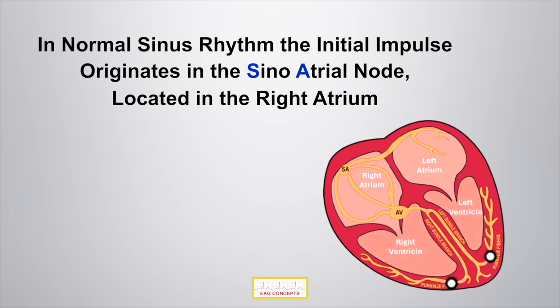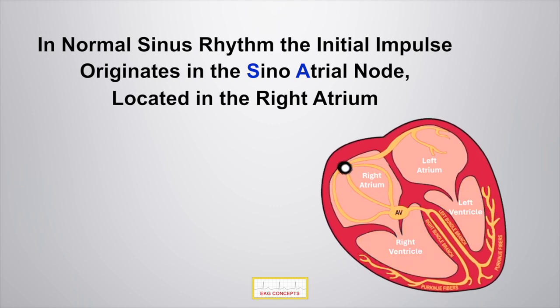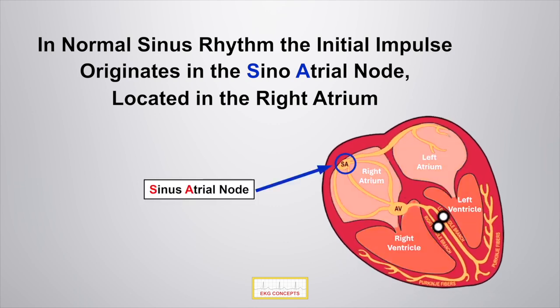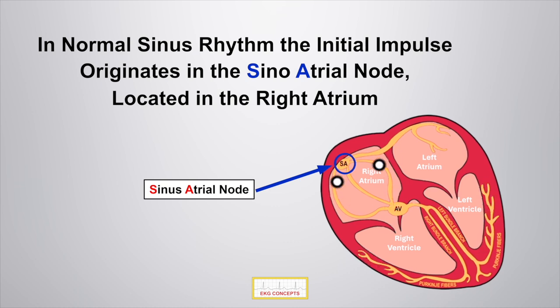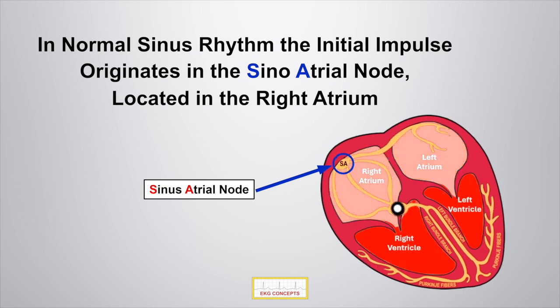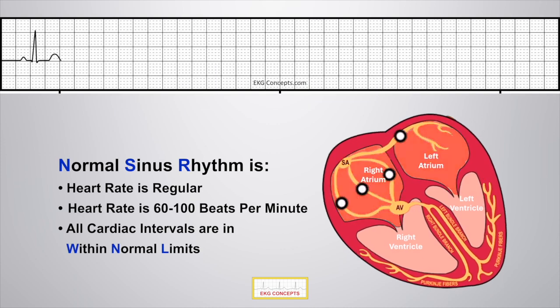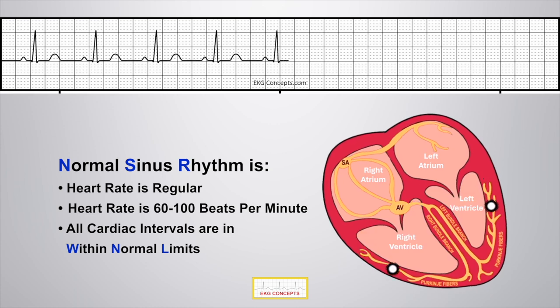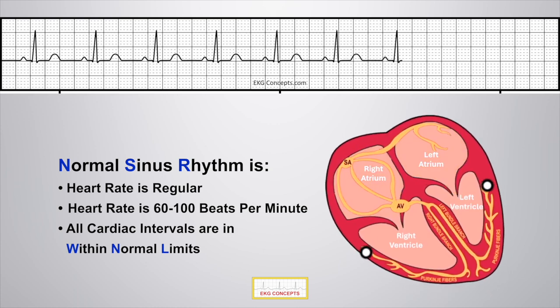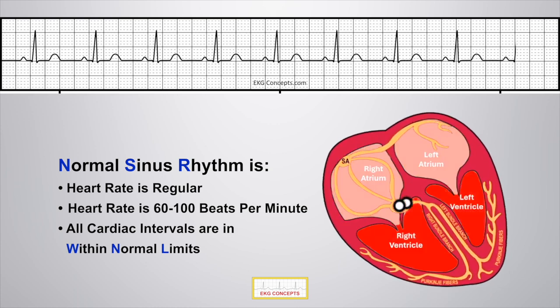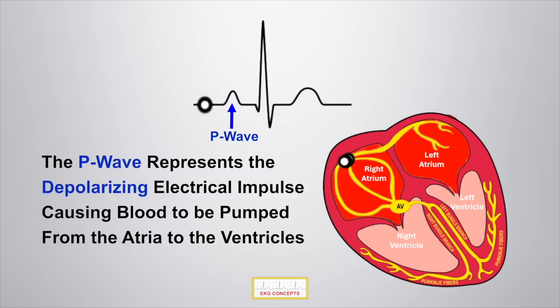In normal sinus rhythm, the initial impulse originates in the sinoatrial node, also referred to as the SA node, located in the right atrium. In normal sinus rhythm, the heart rate is regular between 60 to 100 beats per minute and all cardiac intervals are within normal limits. The P wave represents the initial impulse from the SA node, causing blood to be pumped from the atria to the ventricles.